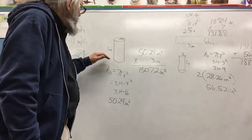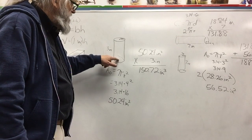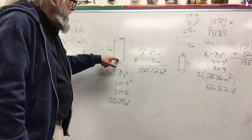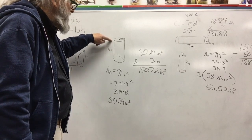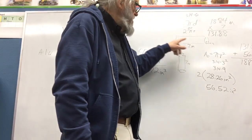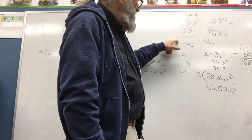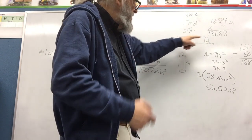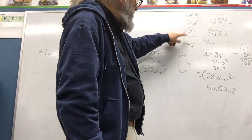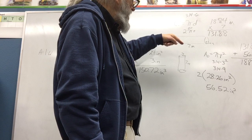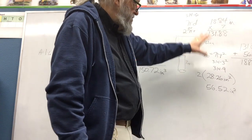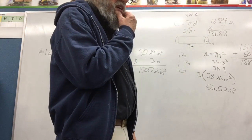To recap: for volume, find the area of the circular base and multiply by the height — that gives you the volume. For surface area, find the area of the circle times two (because there are two of them), then find the area of the lateral surface which is the circumference times the height, and add those two together to get the total surface area.